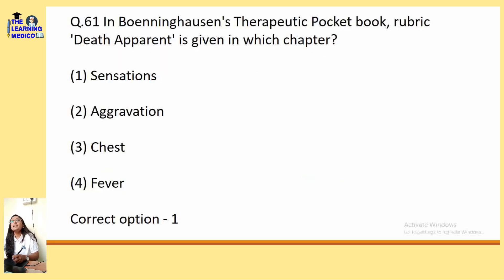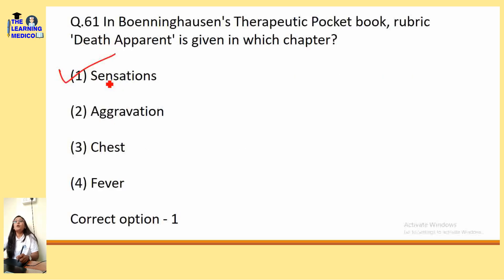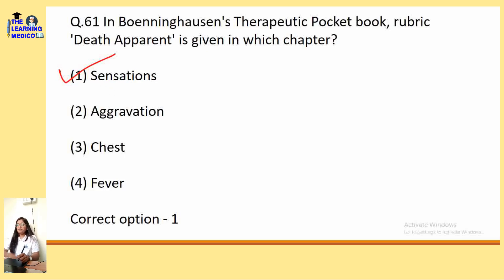In Pony Usens Therapeutic Pocket Book, the rubric 'Death Apparent' is given in which chapter? The answer is Sensation. I have already given you the important rubrics in the TPB chapter in my previous videos, so I have not repeated them in this video.